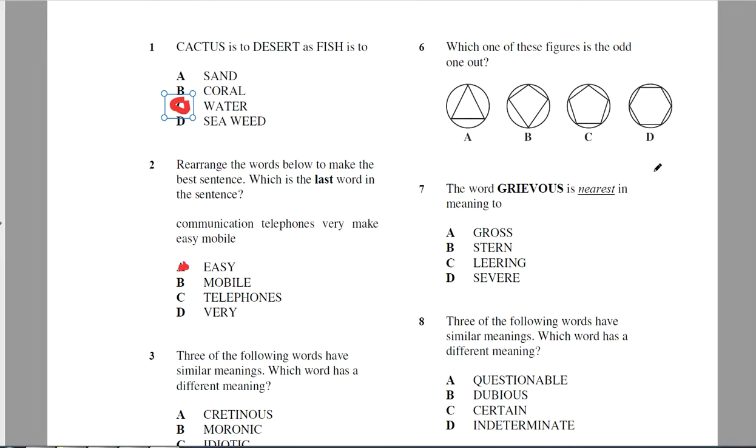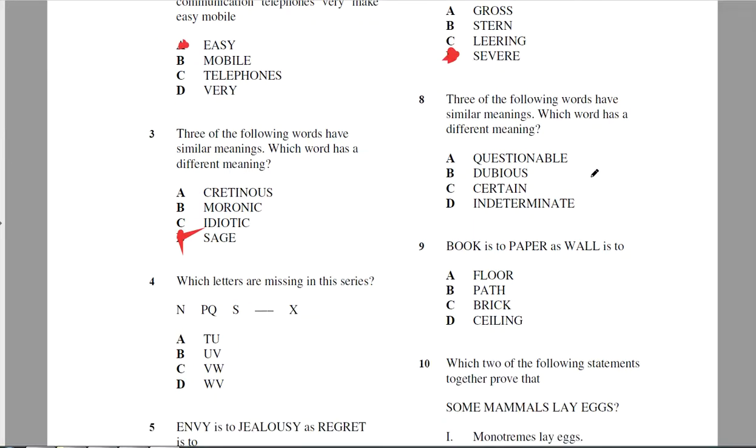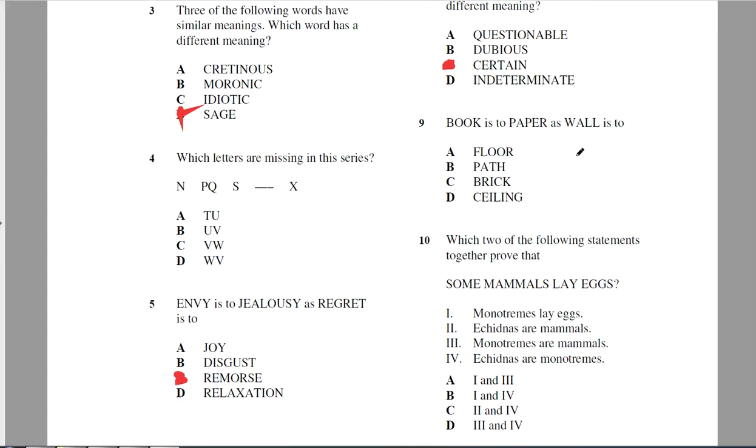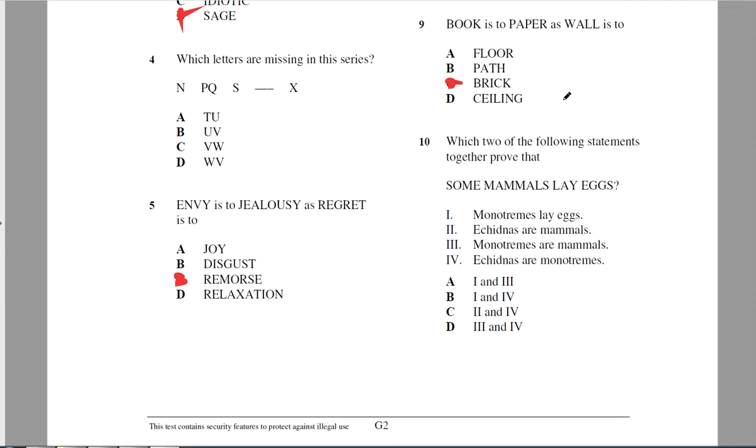I'll skip the pattern one for now. Grievous means serious or severe, so is nearest. Grievous bodily harm, severe bodily harm. Which word has a different meaning? Certain. The other three mean not certain. Book is the paper, so a book has paper in it. A wall, or a book is made of paper, I guess you would say. A wall would be made of brick. That's the only one that would apply there because the others are other structures.